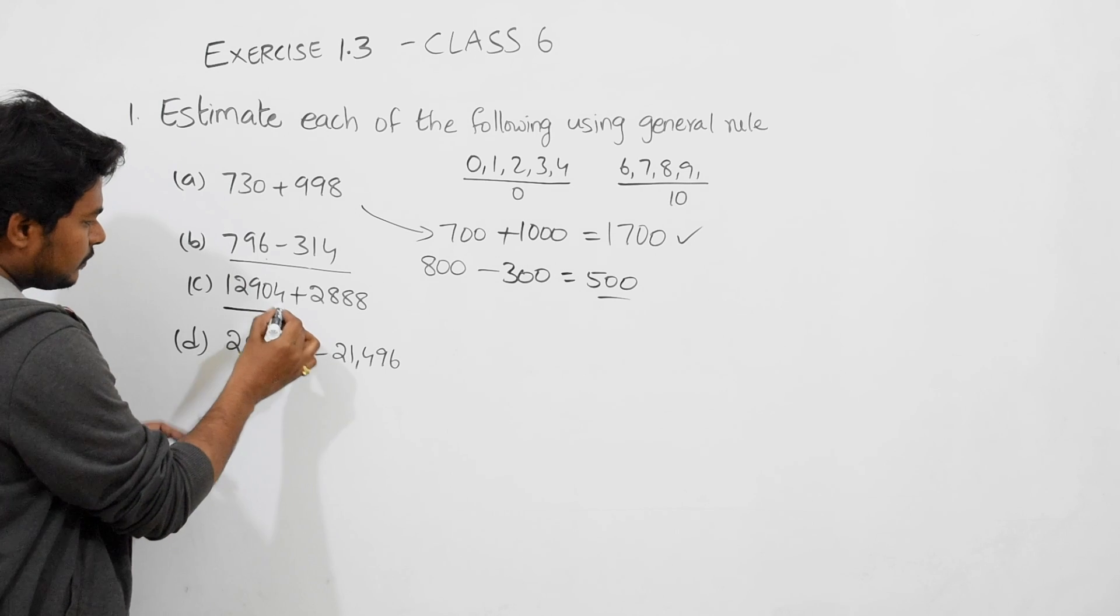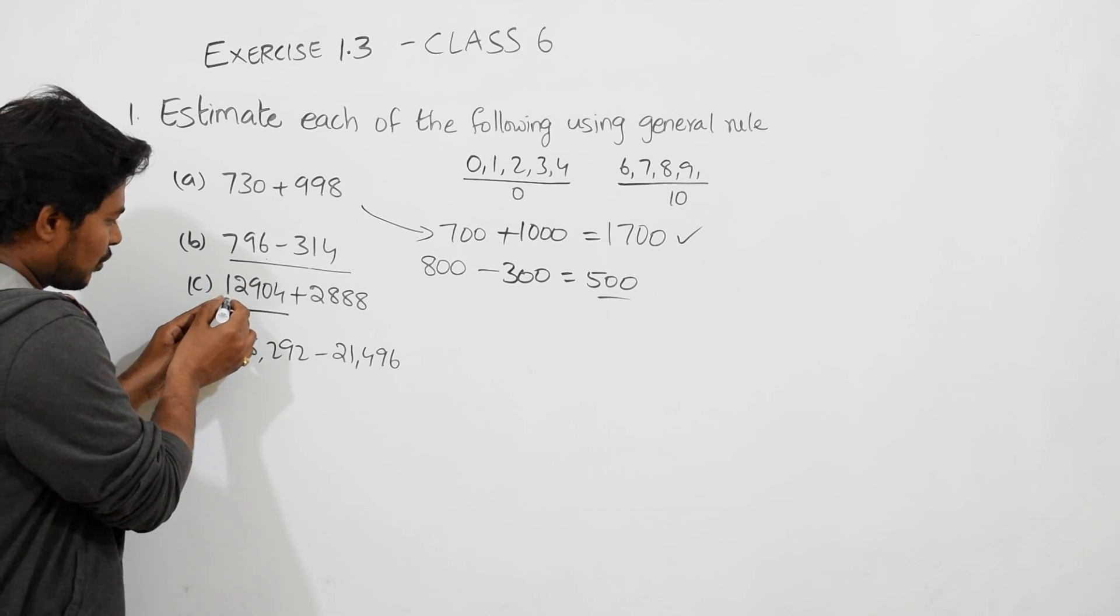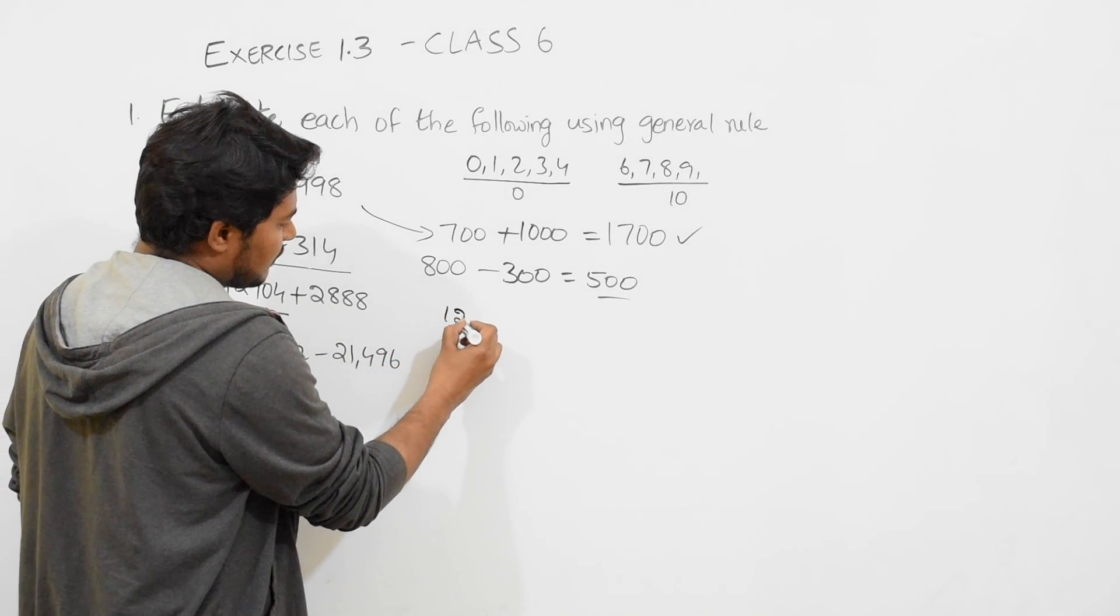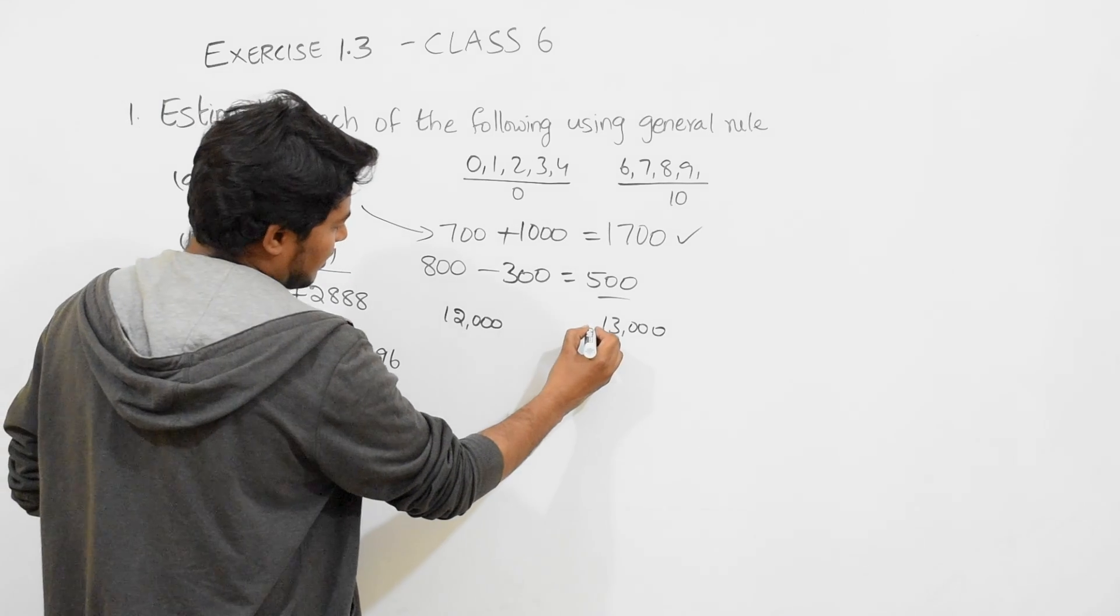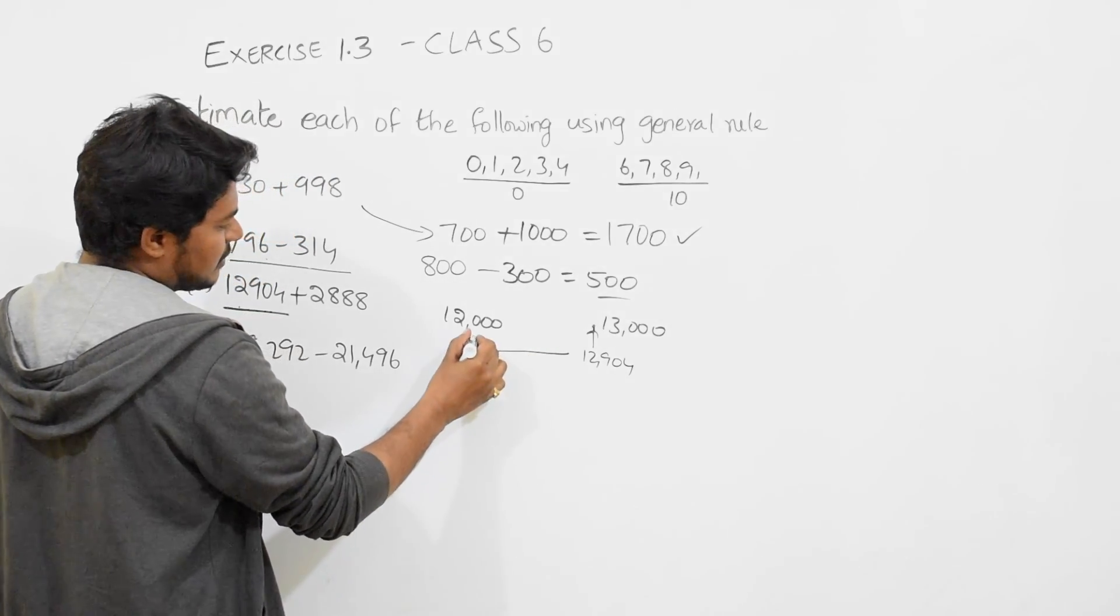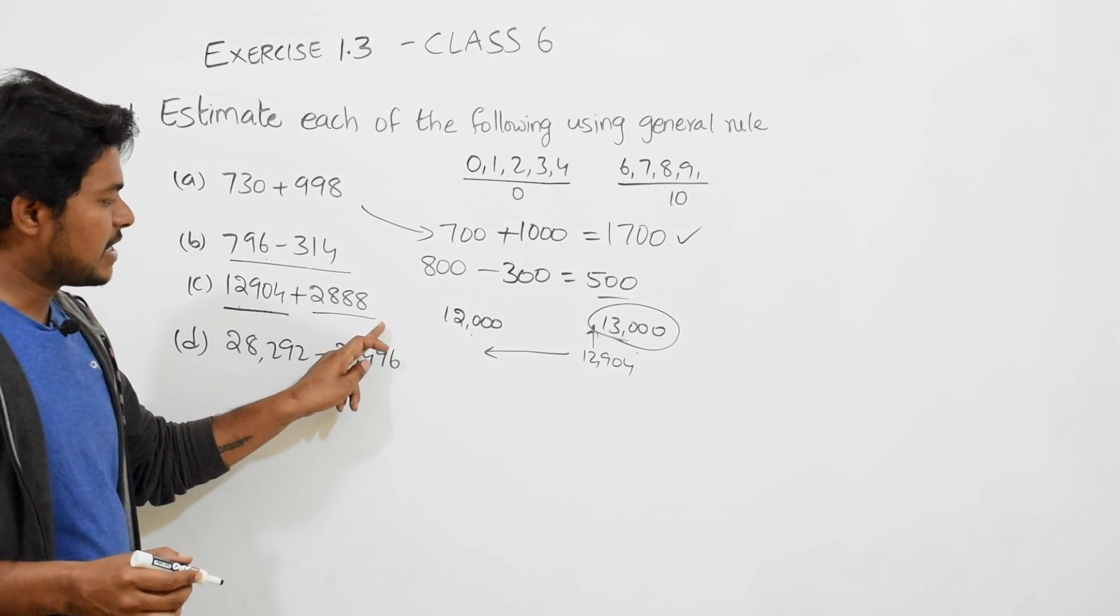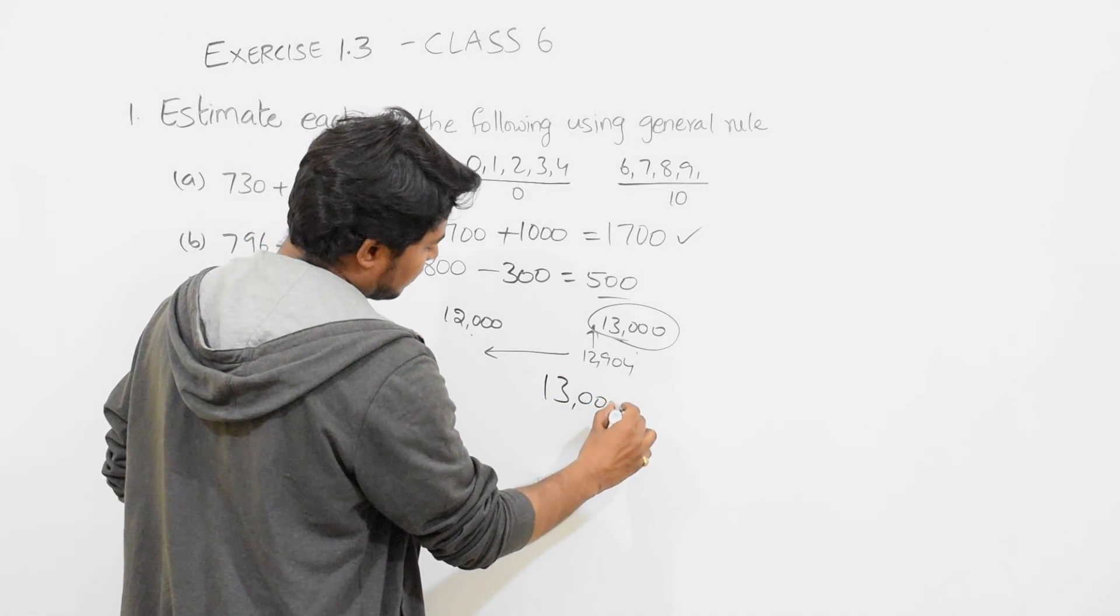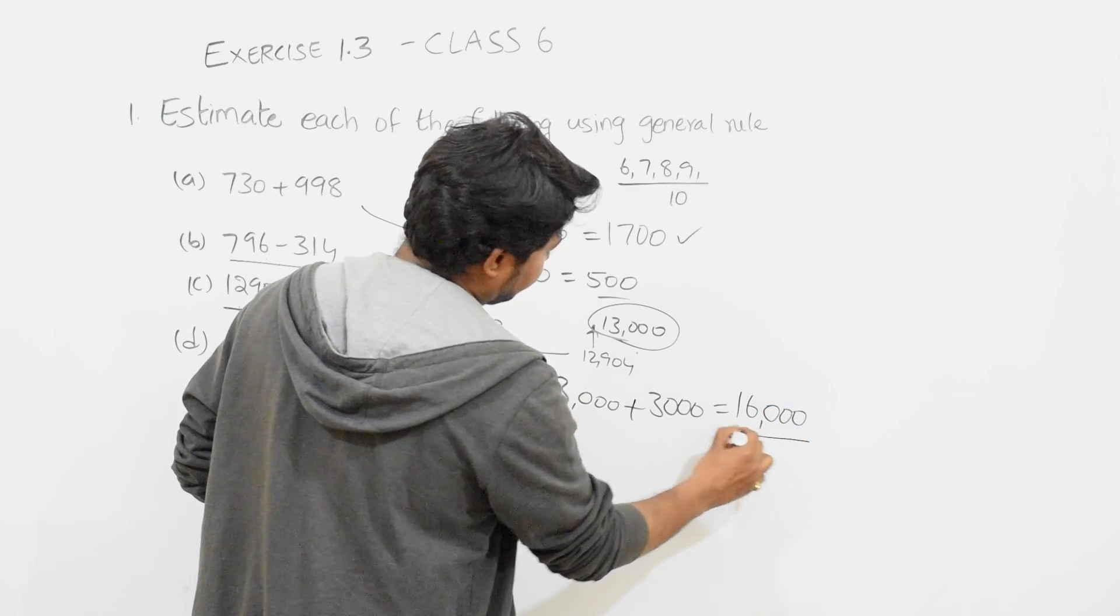Next: 12904 plus 2888. 12904, we can estimate to 13000. Why? Because in the number line, 12000 will be there and 13000 will be there. This value, 12904, is right here in the number line. It is very far from 12000 and very near to 13000, so we estimate to 13000. With 2888, which is close to 3000, we estimate that to 3000. So 13000 plus 3000 equals 16000.